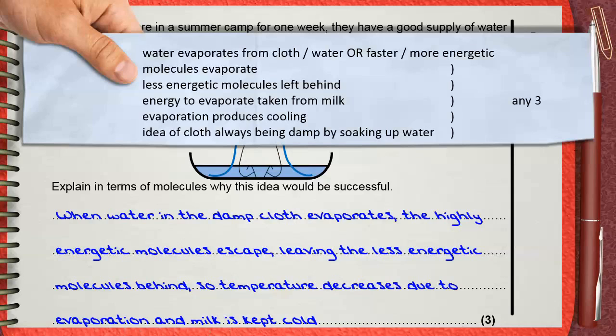Any three of these ideas will give the three marks of the question. We said that the water on the cloth evaporates. We said that the least energetic molecules are left behind, so temperature will decrease. This is enough for the three marks.